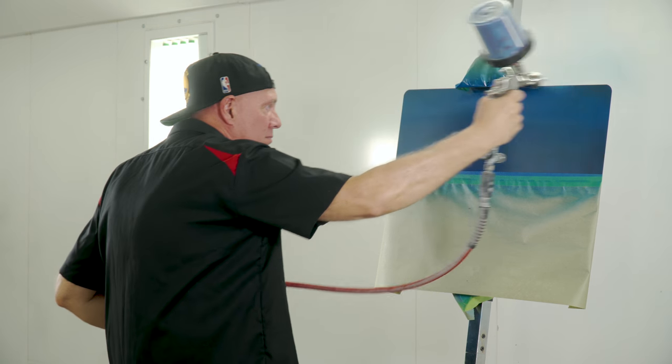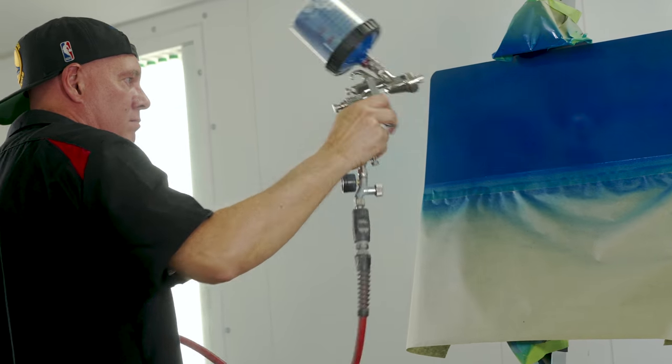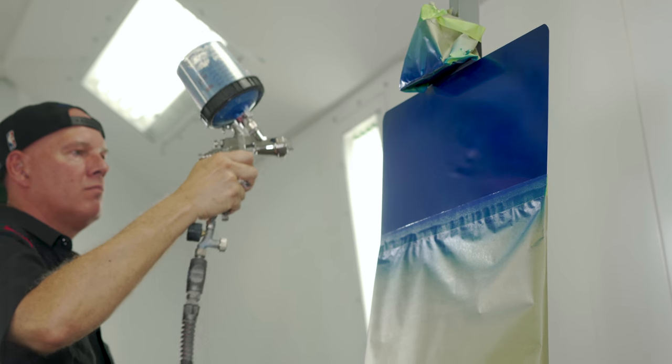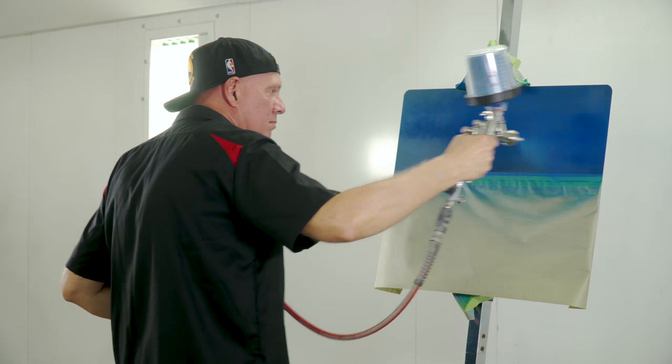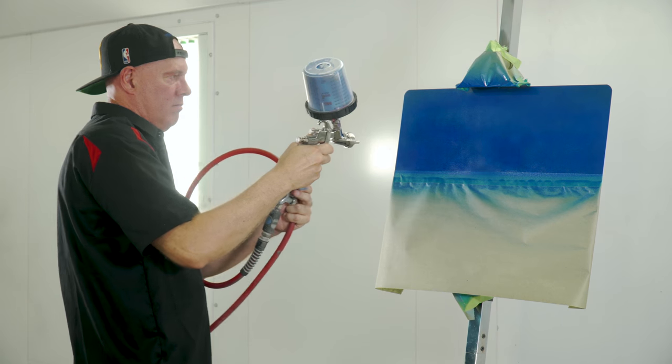Shooting the same pearl blue over black sealer on top, using the exact same number of coats and process: 6 inches from the surface, maintaining 50 percent overlap, 20 to 24 PSI at the gun.